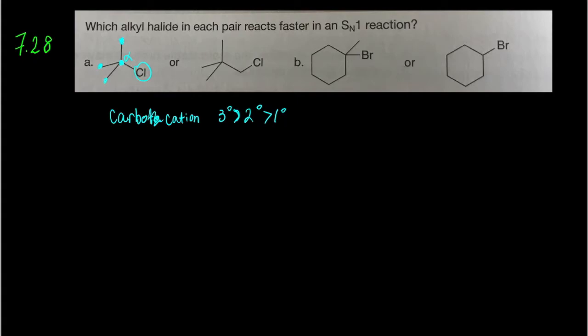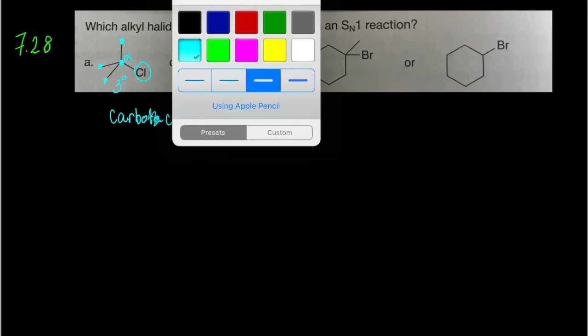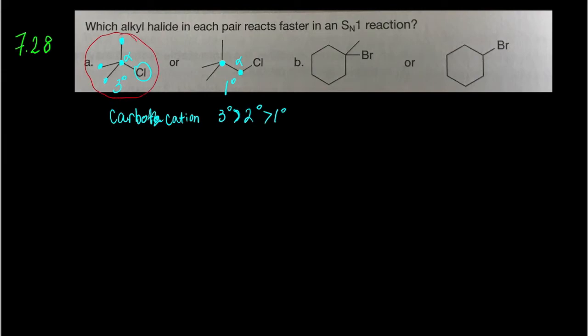We would classify this one here as tertiary. When you identify the alpha carbon here, you can see that it's only attached to one additional carbon, so that's going to be primary. For this one, the first molecule in the pair reacts faster.